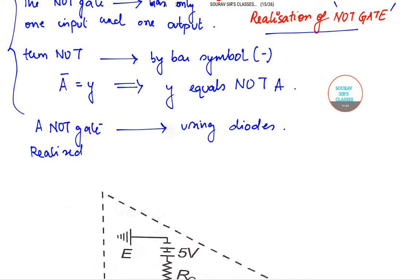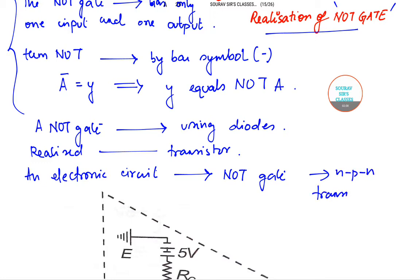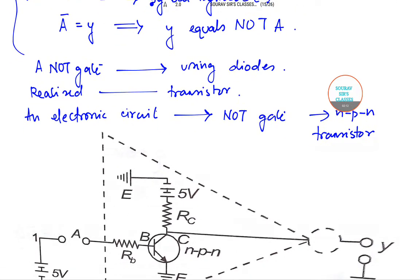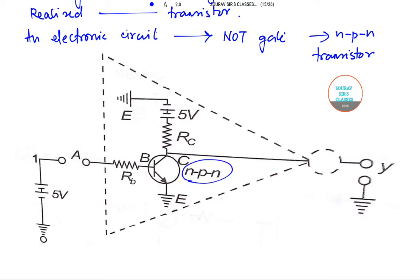An electronic circuit of a NOT gate using an NPN transistor is drawn here, and you can have a look. This is our NPN transistor. The base B of the transistor is actually connected to the input, denoted by A, through a resistance which is denoted by RB.